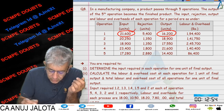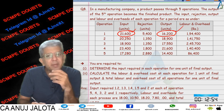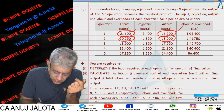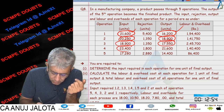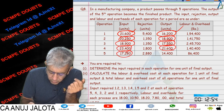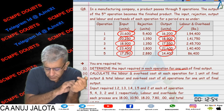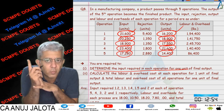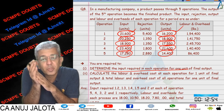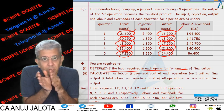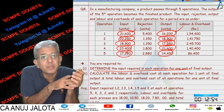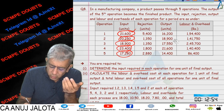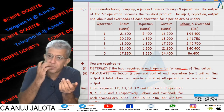There is an input in the first process and output in the second process. For some other period they have given you input and output across multiple processes, and they have asked you to determine the input required in each operation for one unit of the final output. If you want one unit of the final output, how much do you have to input in each and every operation? Your previous two questions only found the input at the beginning — now you find the input at each and every stage, separately for each process.